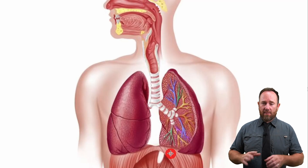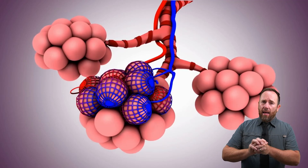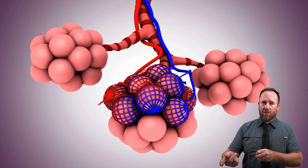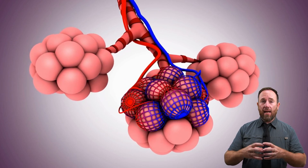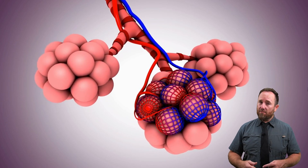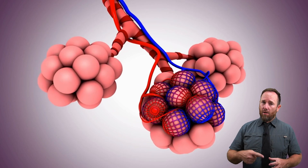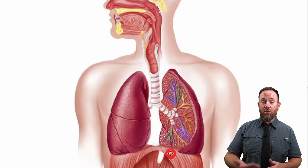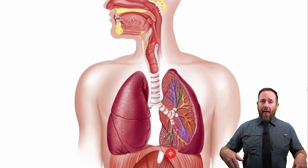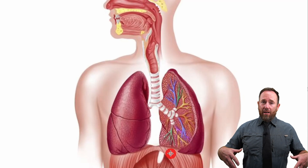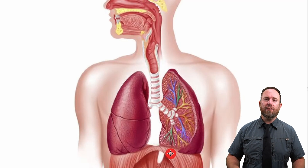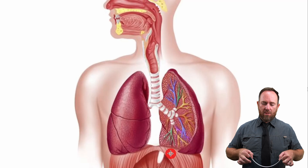Now as you have air in your alveoli, the capillaries surrounding them are busy with gaseous exchange — popping all the oxygen out of the alveoli into the bloodstream, and vice versa, the carbon dioxide waste gets moved into the blood.